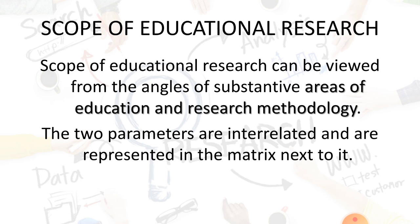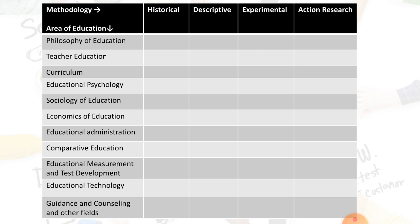Now, the scope of educational research can be viewed from the angle of substantive areas of education and research methodology — these two parameters are interrelated. The areas of education include: philosophy of education, teacher education, curriculum, educational psychology, sociology of education, economics of education, educational administration, comparative education, educational measurement and test development, educational technology, guidance and counseling, and other fields.